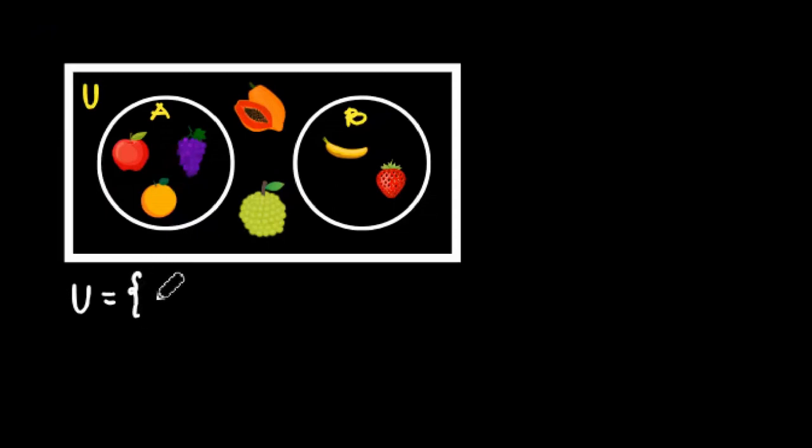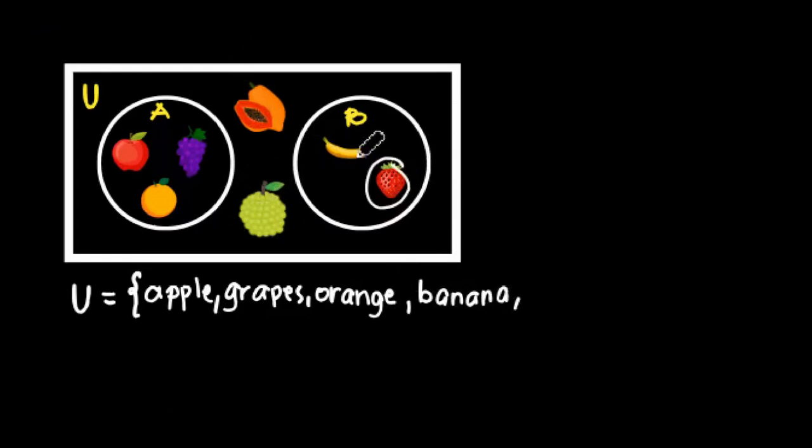So let us try to list down all the elements inside the Venn, inside the universal sets. The first element that we'll be going to list down is the apple. It's inside set A. We also have grapes, we also have orange. Then we have banana. We also have strawberry.